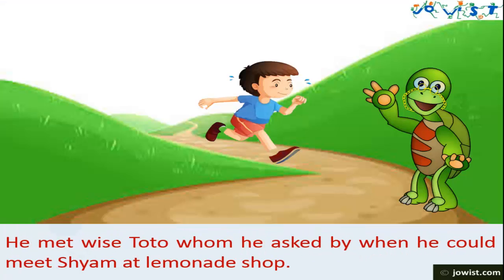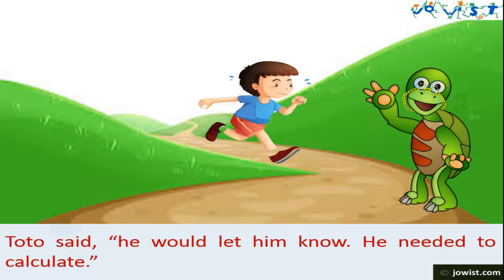He met wise Toto, whom he asked by when he could meet Shyam at lemonade shop. Toto said he would let him know he needed to calculate.